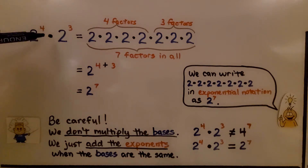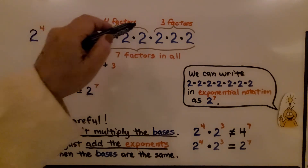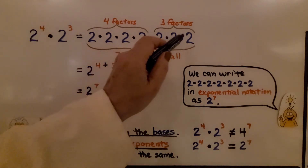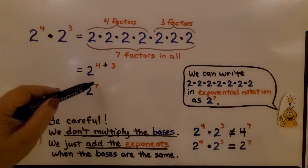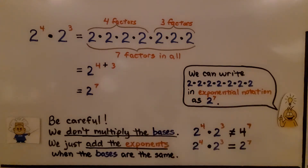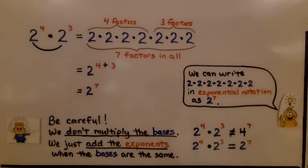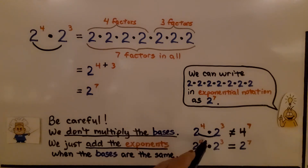Here we have 2 raised to the fourth power multiplied by 2 raised to the third power. 2 to the fourth power is 4 factors of 2, and 2 to the third power is 3 factors of 2, giving us 7 factors of 2 total — 2 raised to the 4 plus 3, which is 2 to the seventh power. But be careful: we do not multiply the bases. 2 to the fourth times 2 to the third is not 4 to the seventh. We keep the like base and just add the exponents to get 2 to the seventh power.